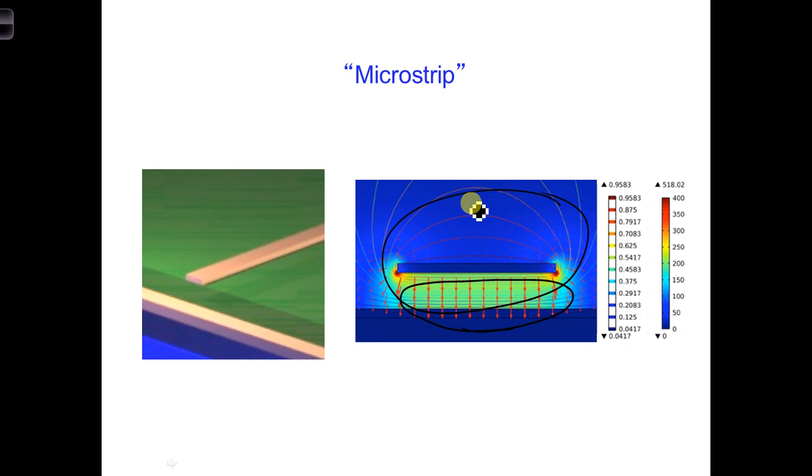The electric and magnetic fields are always perpendicular to each other as they travel into the screen, down the microstrip.